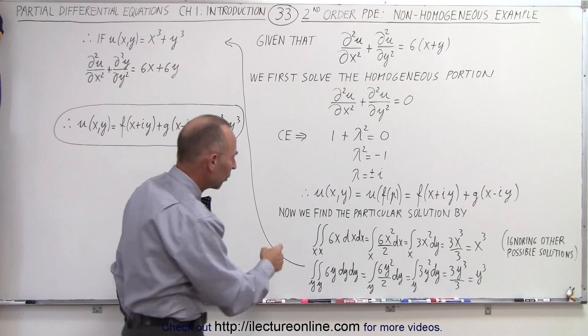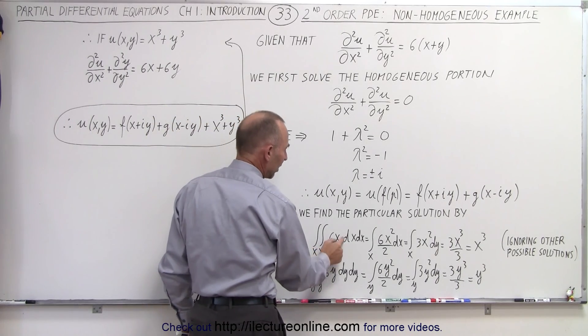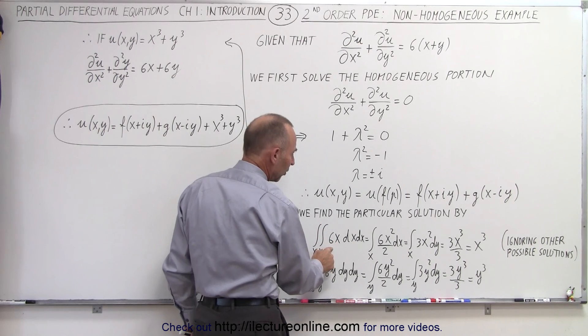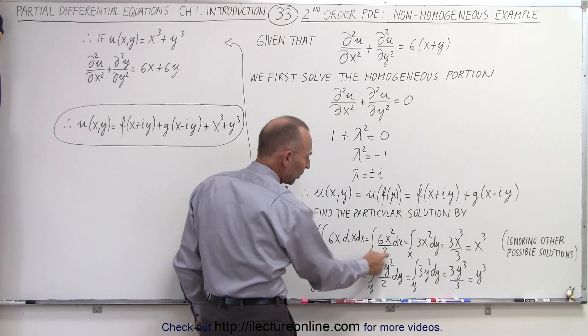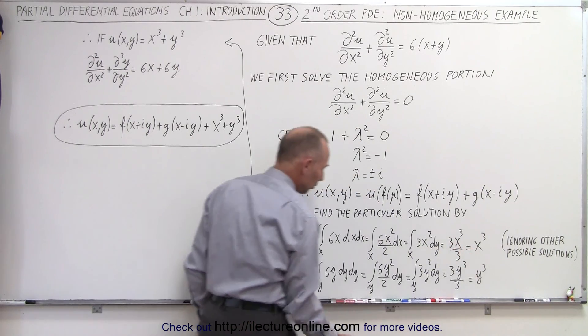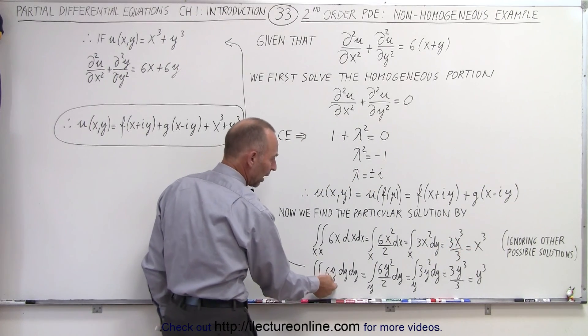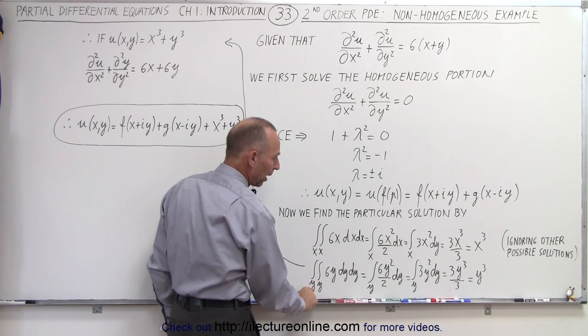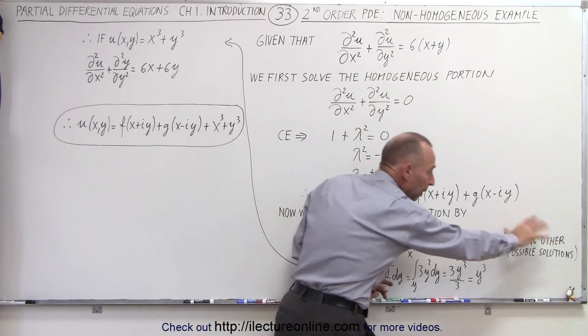We can figure that out by going backwards. We take 6x and we integrate that twice with respect to x only, so we end up with 3x squared, we integrate again, we end up with x cubed. We do the same for y, we have 6y, we integrate only with respect to y, and we ignore any other possible solution.